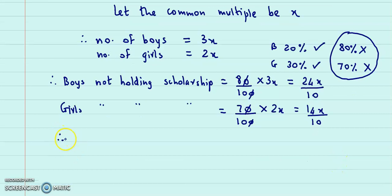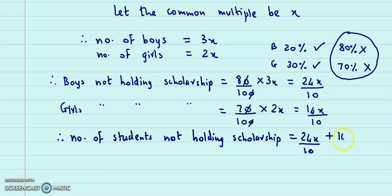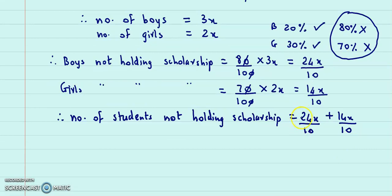Therefore, the total number of students not holding scholarship — combining both boys and girls — is 24x upon 10 plus 14x upon 10. Adding 24 and 14, we get 38x upon 10. These are the students who are not holding scholarship.